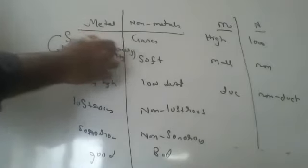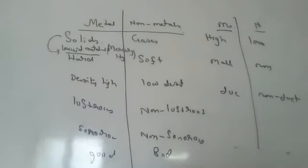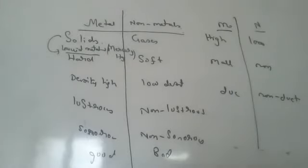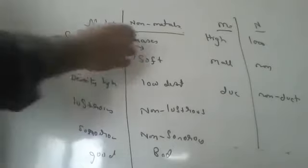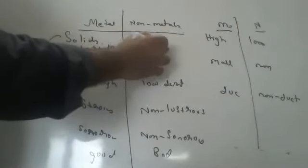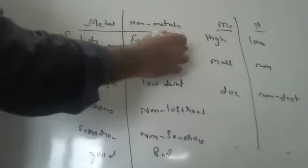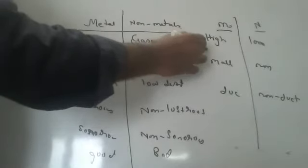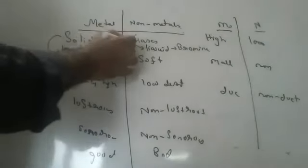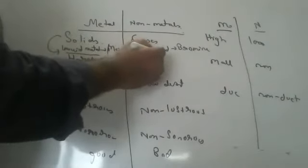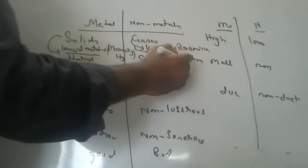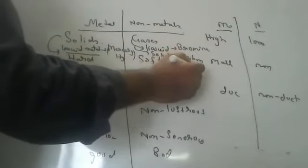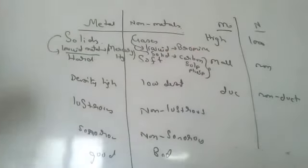You might have also seen mercury in laboratory apparatus — mercury is a liquid metal. Almost all non-metals are gases, but some of them are liquids. Which is the liquid non-metal? Bromine. Bromine is the liquid non-metal. And which are solid non-metals? Carbon, sulfur, and phosphorus — all these are solid non-metals.